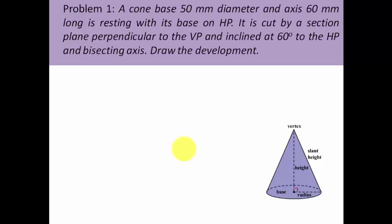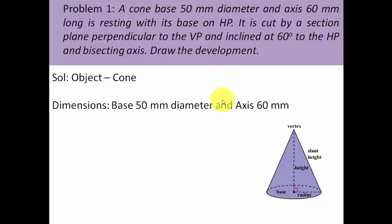And here it is. So it's based on a cone having base 50mm diameter and axis 60mm long is resting with its base on HP. It is cut by a section plane perpendicular to the VP and inclined at 60 degrees to the HP and bisecting axis. Draw the development.